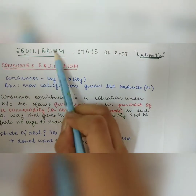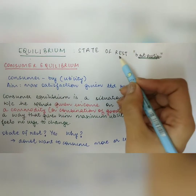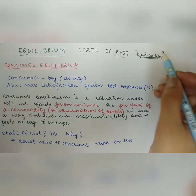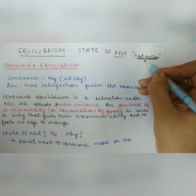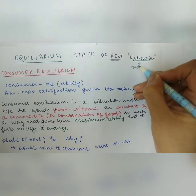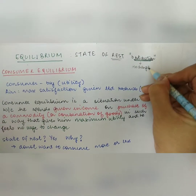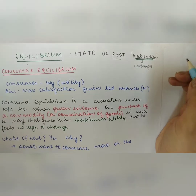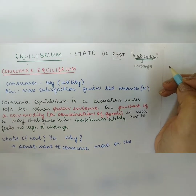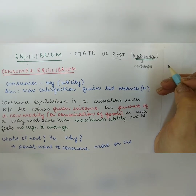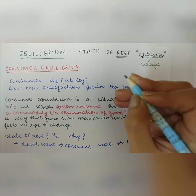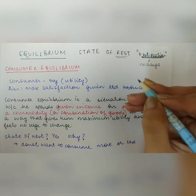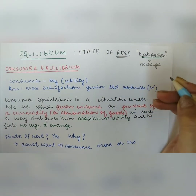What does equilibrium mean? Equilibrium means a state of rest, or it is the best position — a position where you do not want to change. A position of no change is called equilibrium. It is a state of rest which, once reached, has no tendency to change the position.